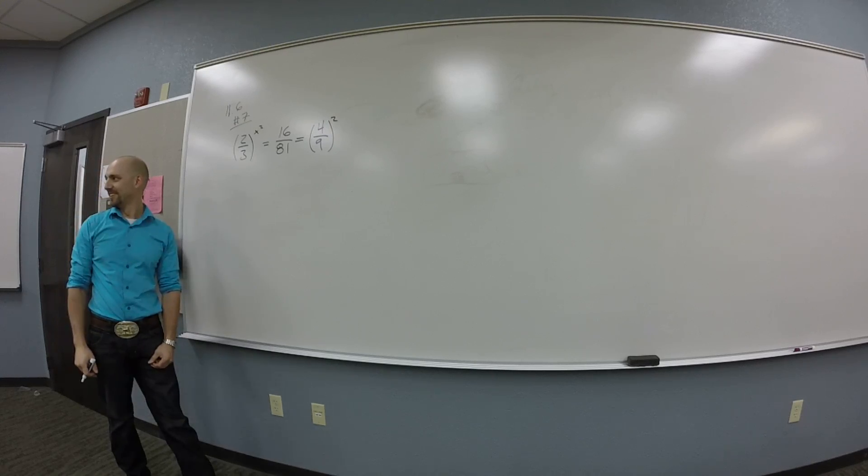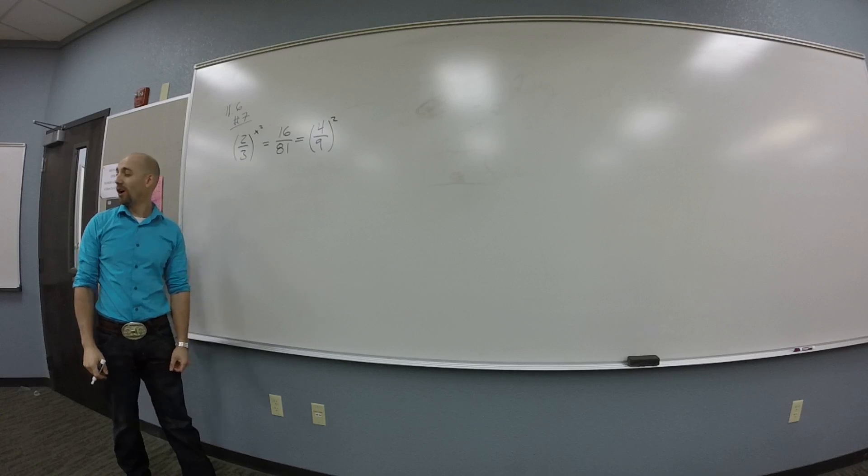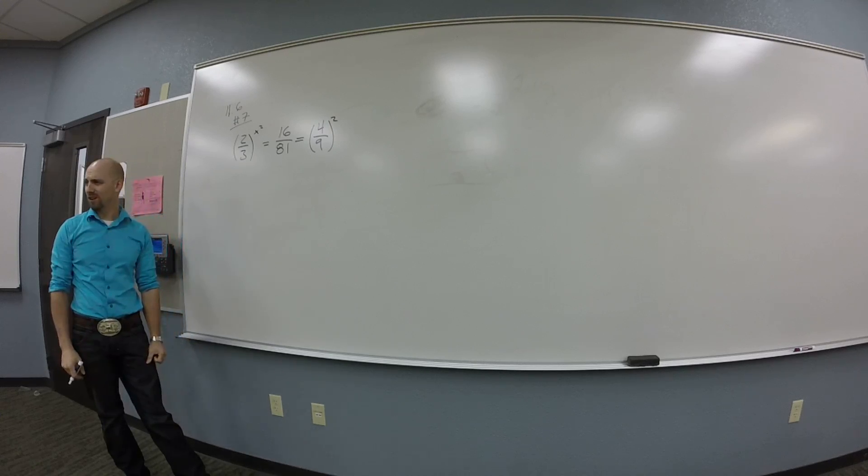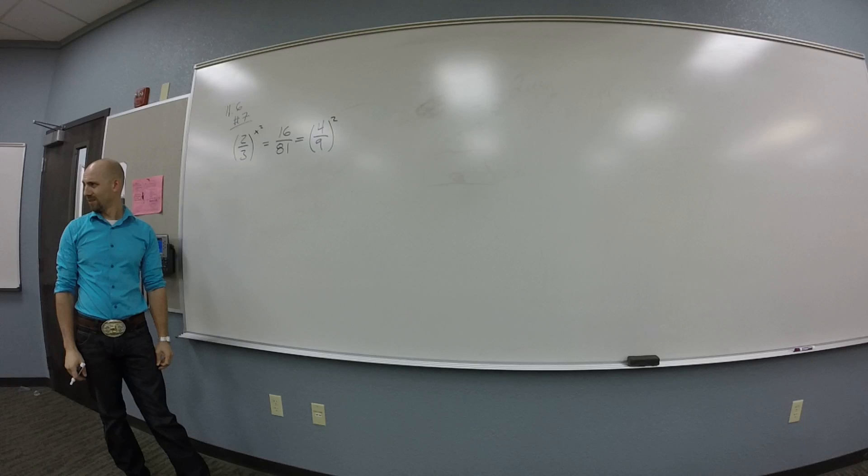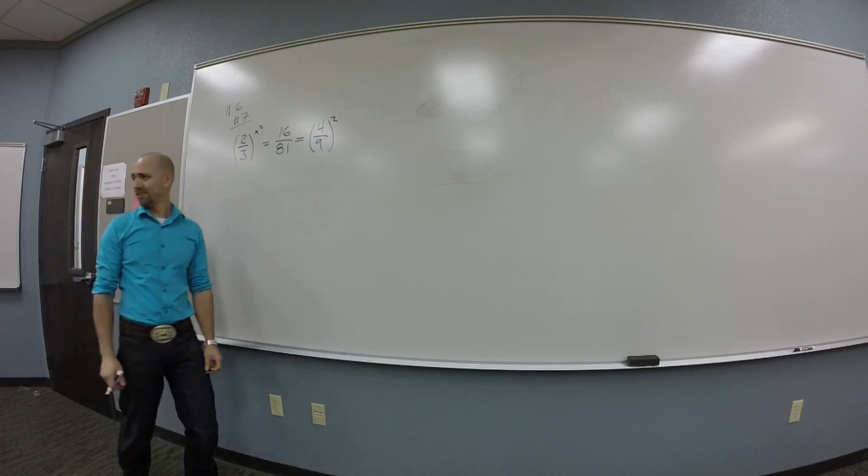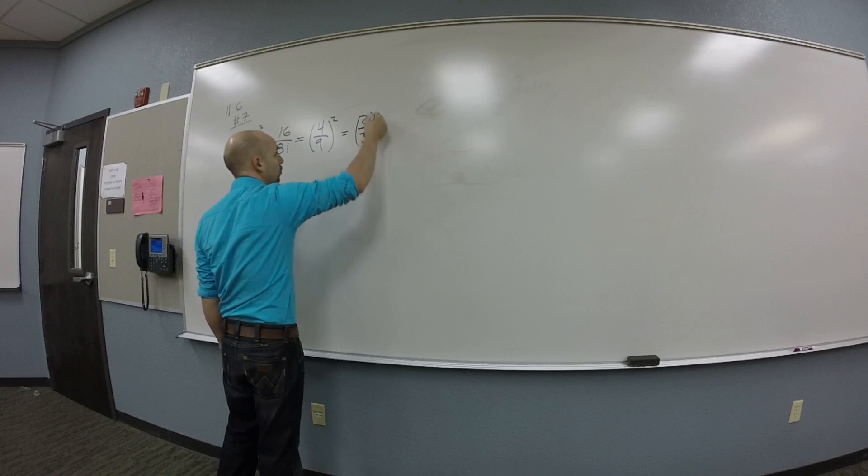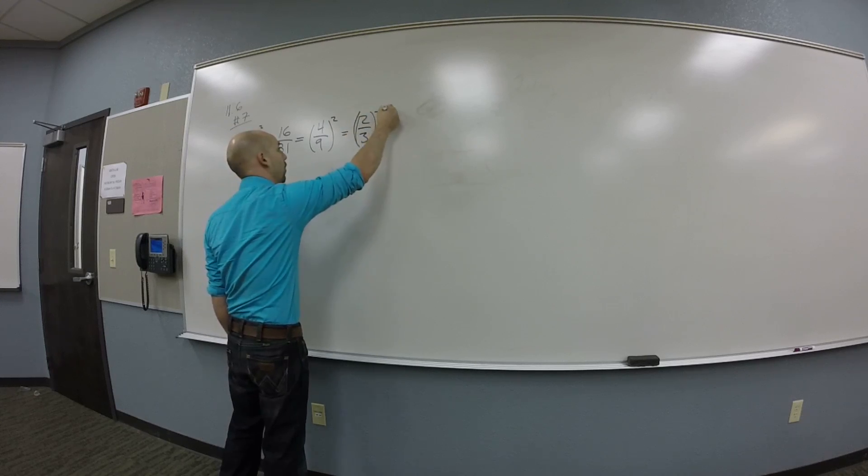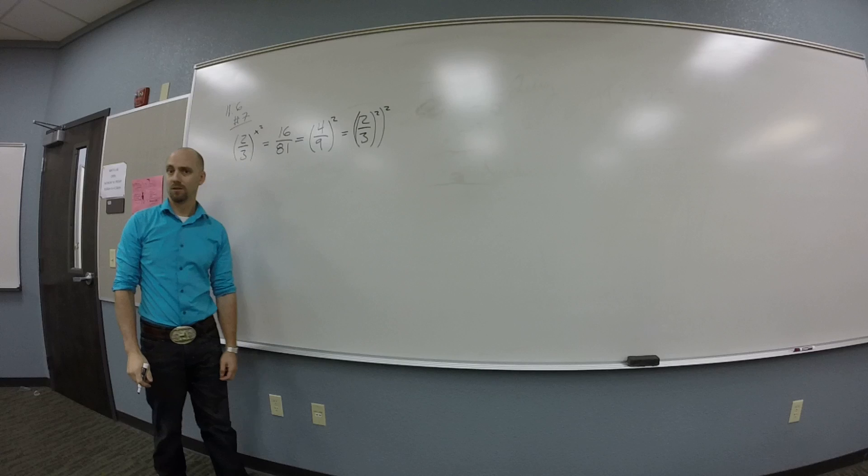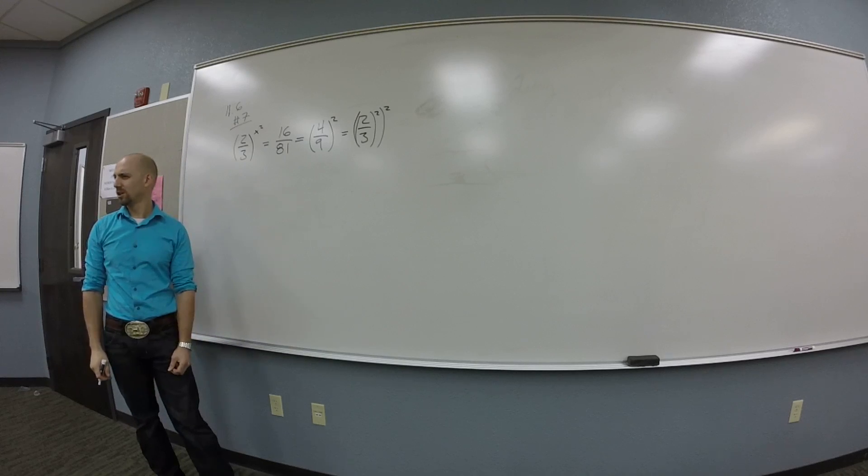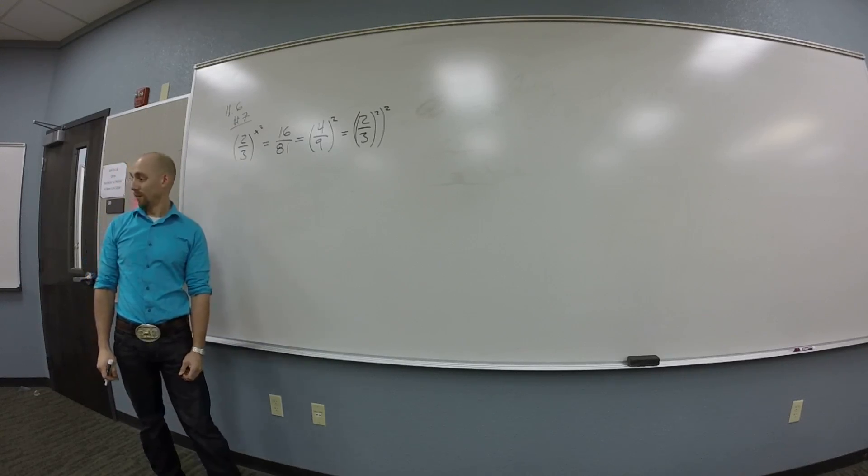Close. So 4/9 is 2/3, what is it? Squared, right? Oh, my goodness. So this is 2/3 squared squared. What do I do with the powers when they're like this? No, multiply. Multiply them.